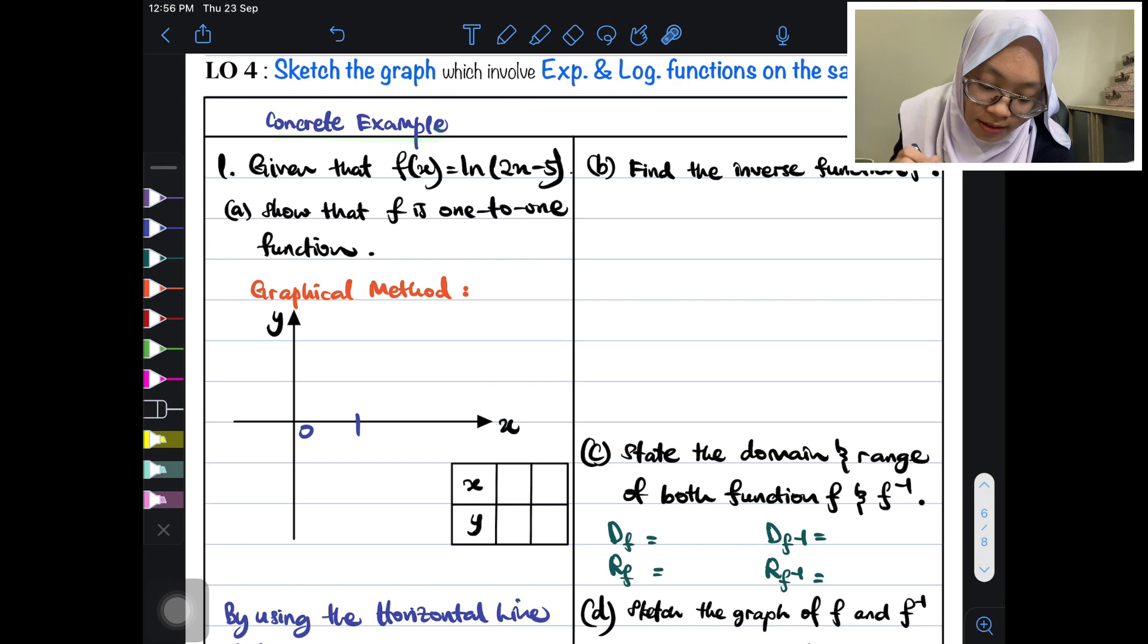So now let's go to the concrete example. We have f(x) equals to ln(2x minus 5). And then show that f is 1 to 1 function. Kalau dia kata show that, means this function memang 1 to 1 function. So now saya akan menggunakan graphical method untuk tunjukkan this function is really 1 to 1 function.